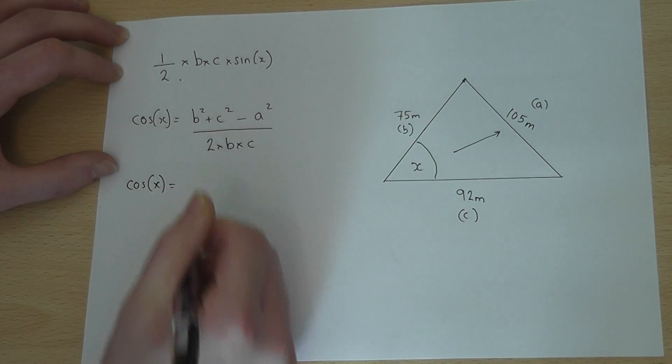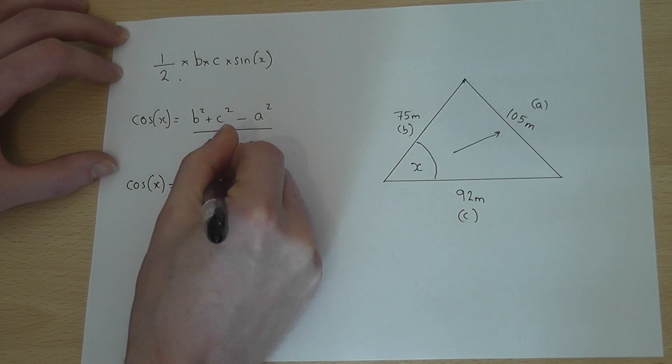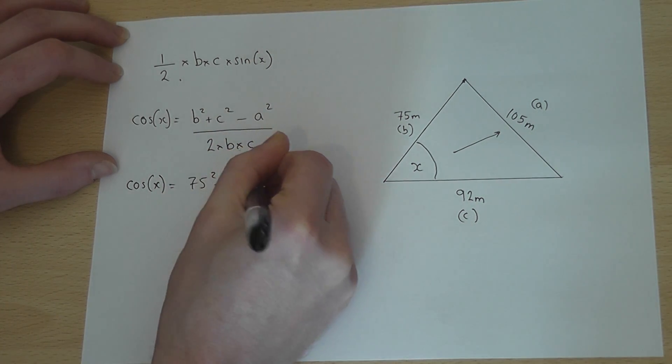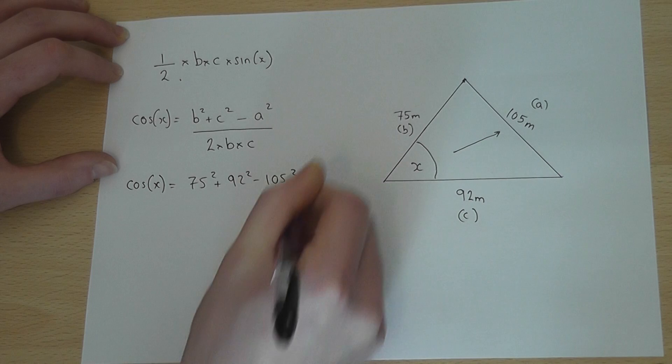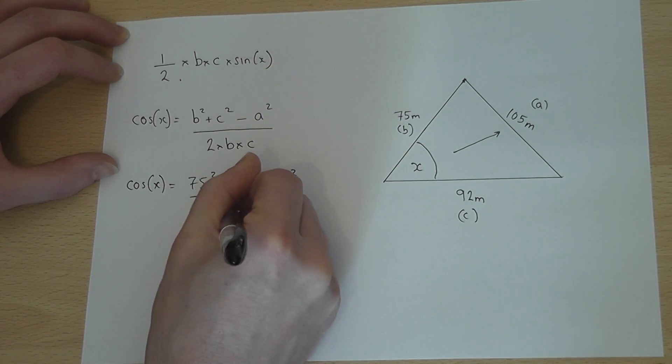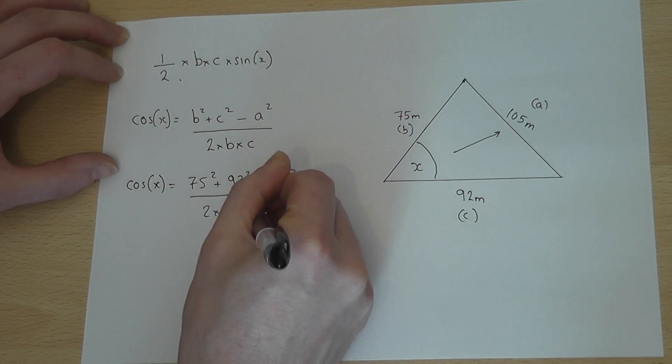Cos of X equals B squared plus C squared, take away A squared, all over 2 times B times C.